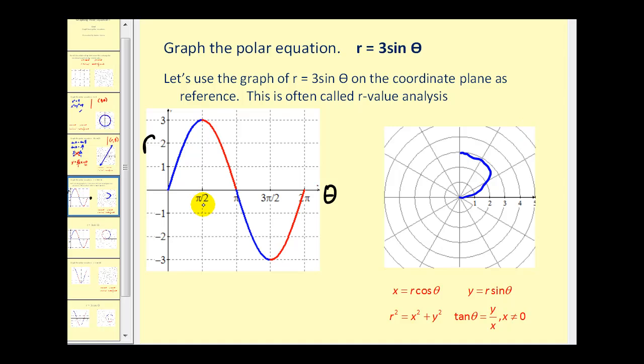Then when theta is between pi over two and pi, or in this region, the radius changes from positive three back to zero. So what happens is we start plotting points that would look something like this from pi over two to pi radians.